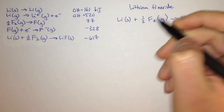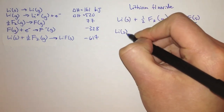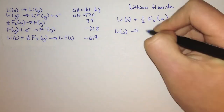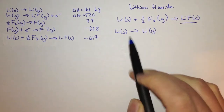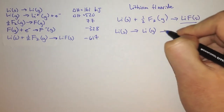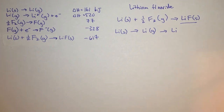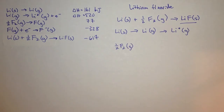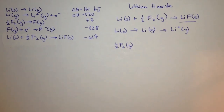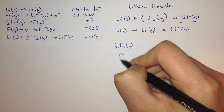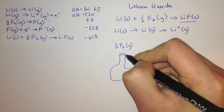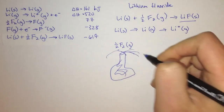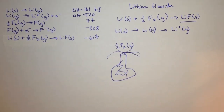First, we take lithium — it's a solid right now and needs to be an ionized gas. So we evaporate the lithium, and then we take away its electron to give it a positive charge. Fluorine comes to us as a gas at room temperature — it comes in bottles and is really bad for you — and just like chlorine, if you breathe it, it's not very good.